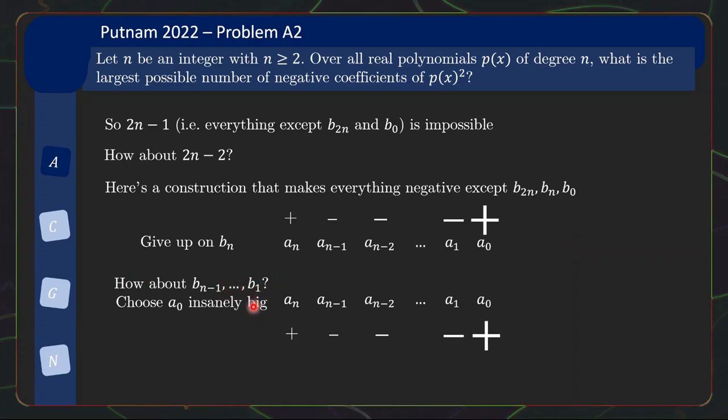And that will help us make b_n-1 to b_1 negative. Why is that? So for example, b_n-1 is the product of all these terms that my cursor is trying to illustrate. So the products here that involve the middle part work out to be positive terms. So if we make a_n-1 times a_0 sufficiently largely negative, it will again cancel all the positive terms, right?